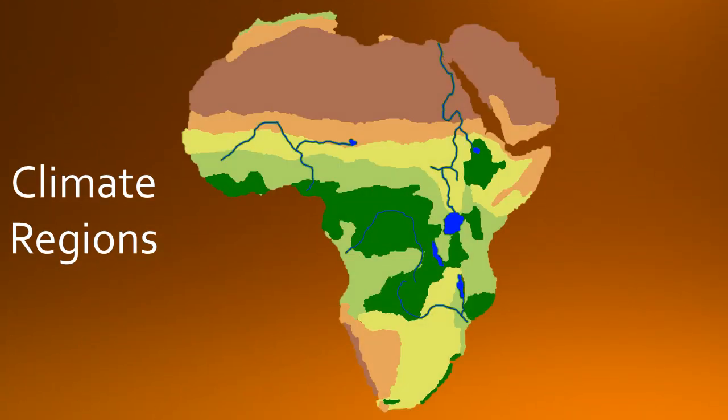Lastly, we have the climate regions of Africa. This is the desert. It is in the northern and southern parts of Africa. It is filled with sand, rocks, and gravel. There is little to no water here. The Sahara Desert divides Africa into two different regions.